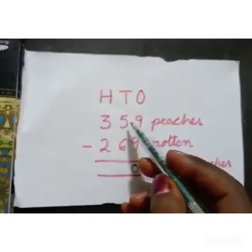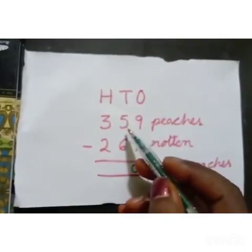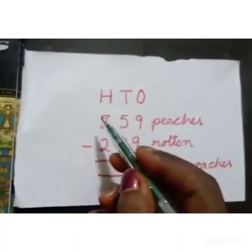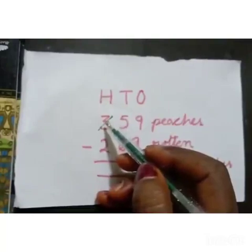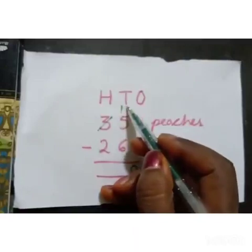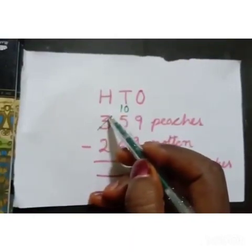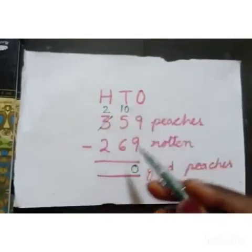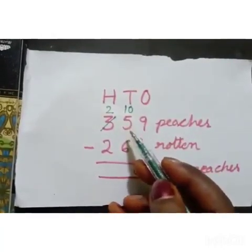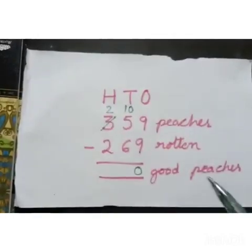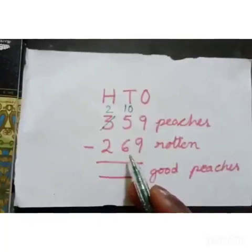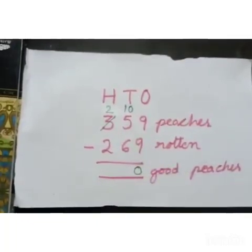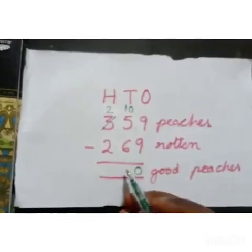In the tens place the numbers are 5 and 6. Since 5 is smaller, we borrow from the hundreds place. There is 3 in the hundreds place, meaning 3 hundreds. We bring one hundred here: 3 minus 1 equals 2. In the tens place: 10 plus 5 equals 15. So 15 minus 6 — counting back: 14, 13, 12, 11, 10, 9. So 9 is the answer in the tens place.